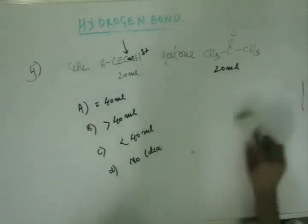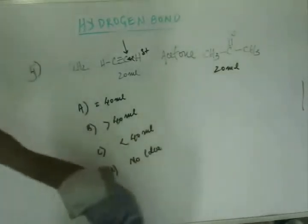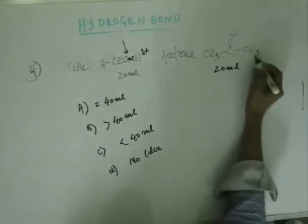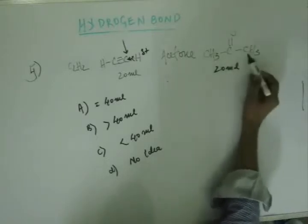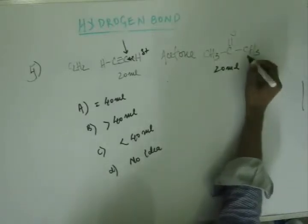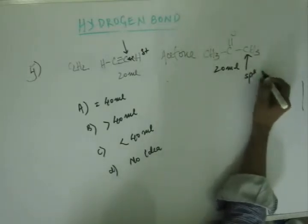Alright. Let's see. What about acetone? Will there be hydrogen bonding in acetone? No. Because the hydrogens are attached to carbon. And this carbon is not sp hybridized carbon. This carbon is sp3 hybridized carbon. Get back to hybridization lecture and listen to them.